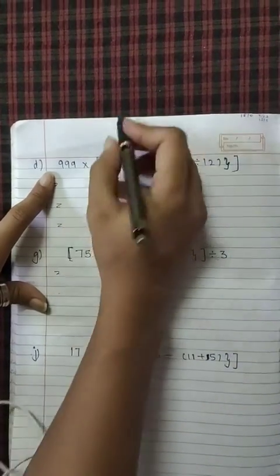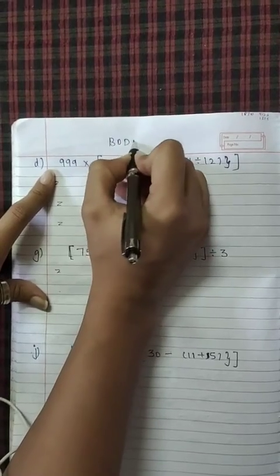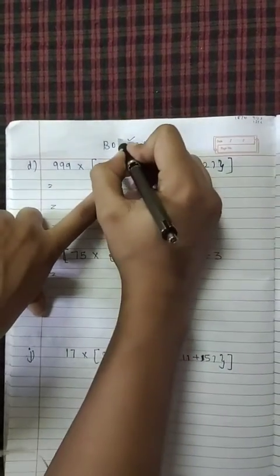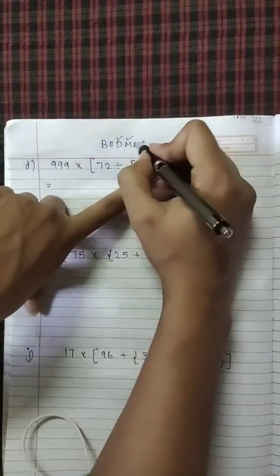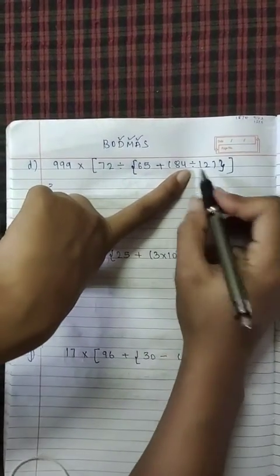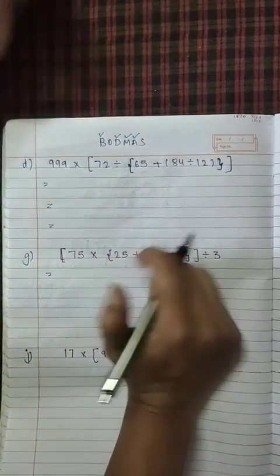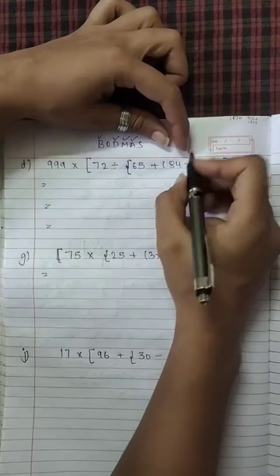D part. Again, BODMAS we have written here. Which operation do we have first? Multiplication, then we have division, then we have addition also, then we have again division and this is bracket. Means first we solve bracket. Which bracket? Round bracket.